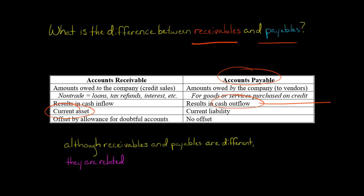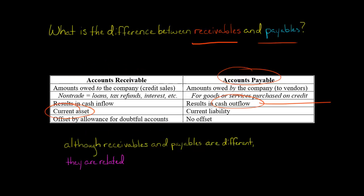Another difference between accounts receivable and accounts payable is that accounts receivable is presented net of the allowance for doubtful accounts. You know that you are owed this money, but you also know that not everybody is going to pay you. Some people are not going to pay you, and so you present accounts receivable on the balance sheet net of the estimated uncollectable accounts.